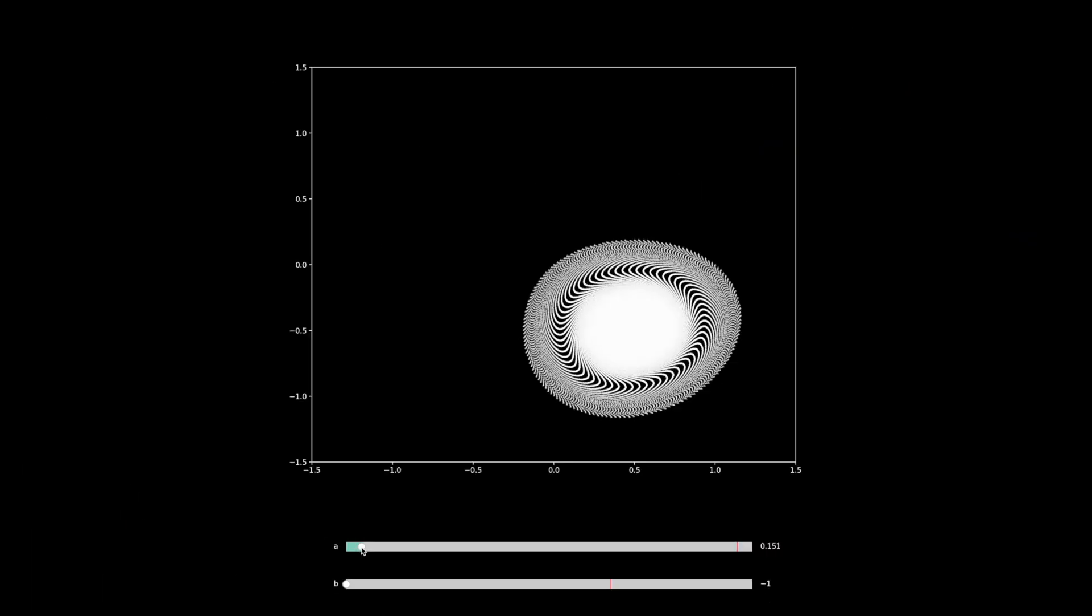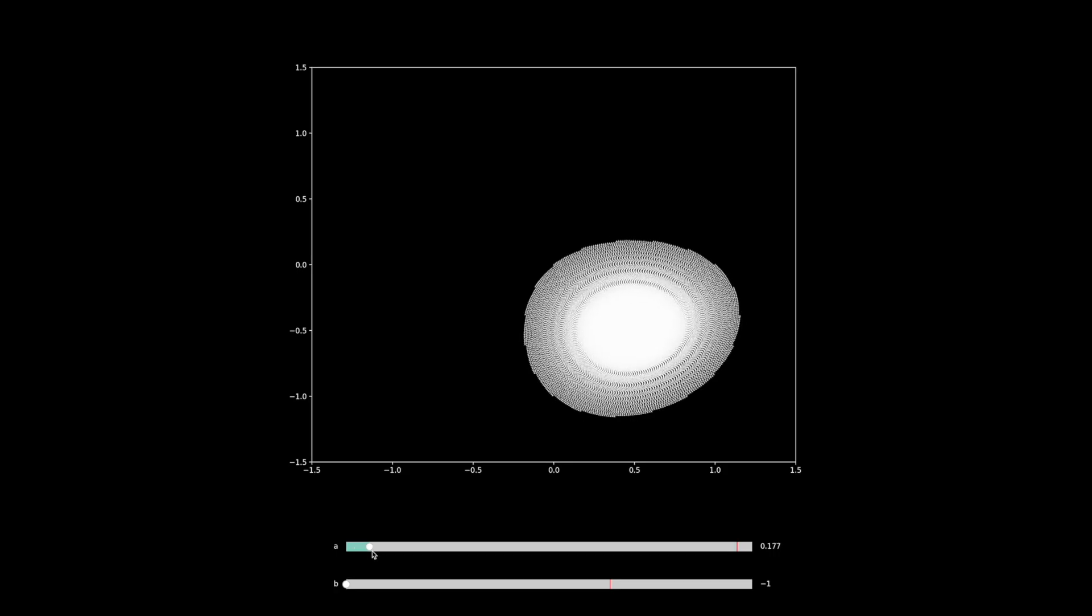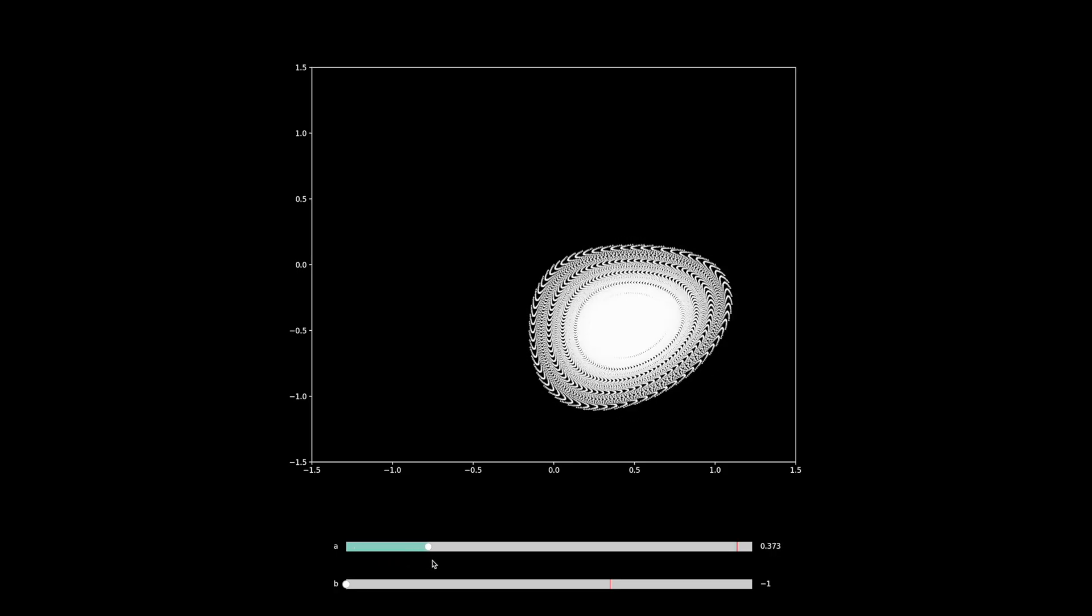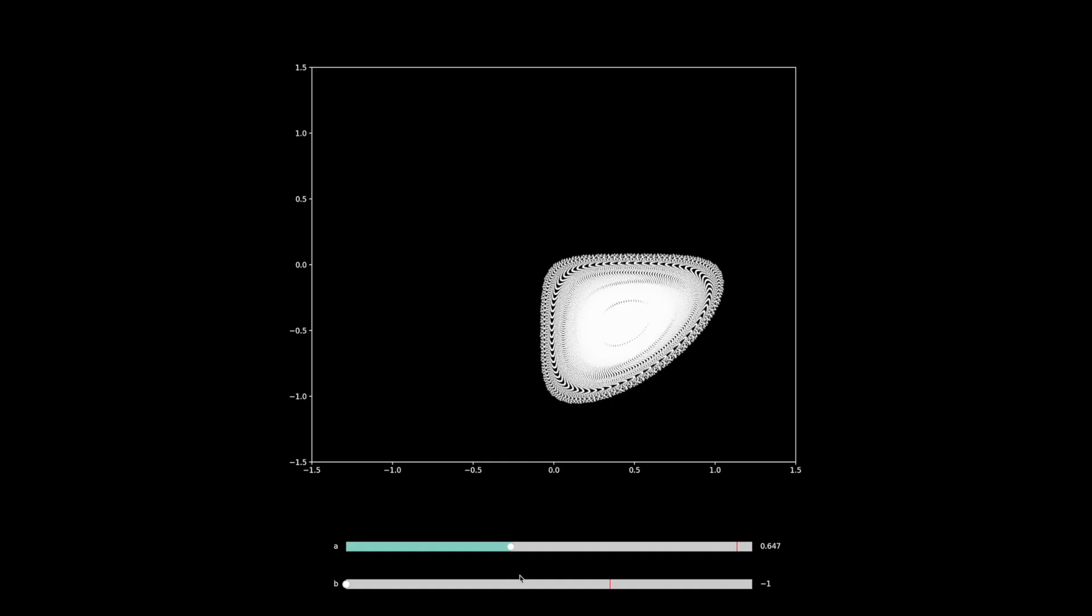And let's try one more plot. Varying A while leaving B constant near minus 1. As we see, we get something completely different.